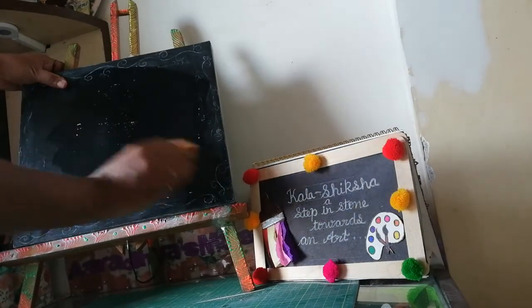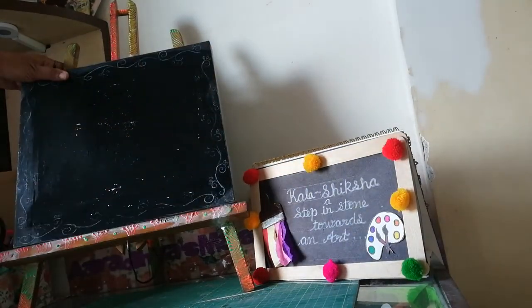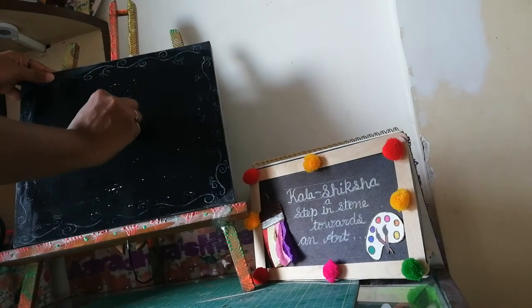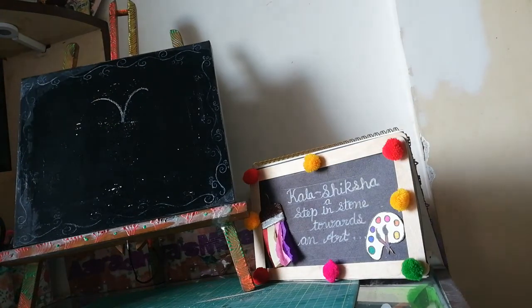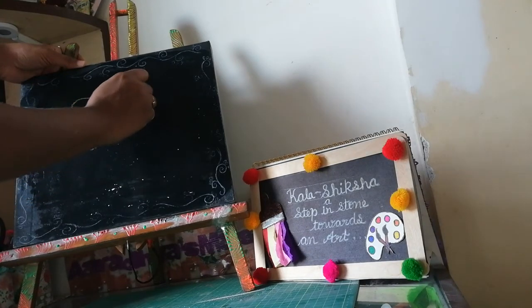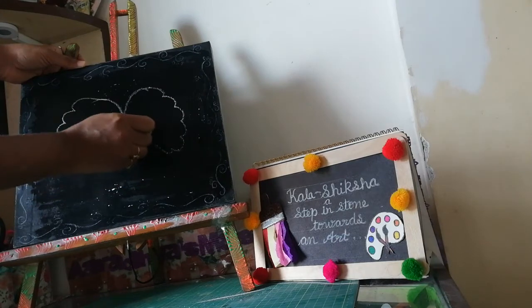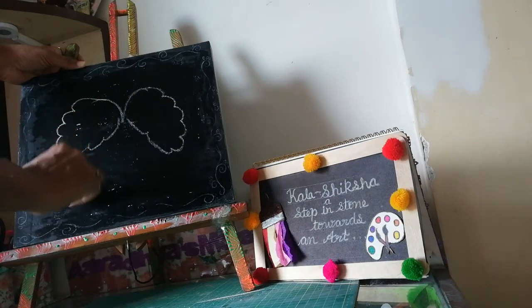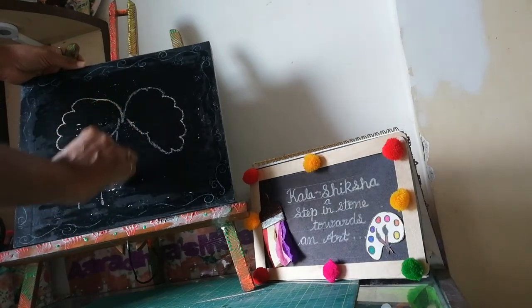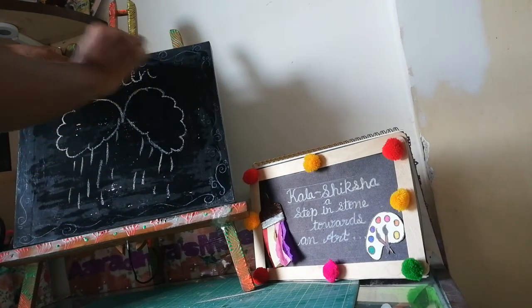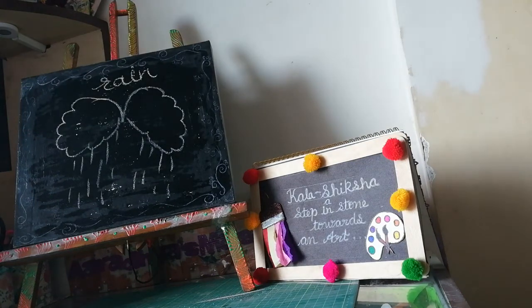Draw some wavy lines like the sky — you can see this. We have drawn the sky. So, this is your rain. R for rain.